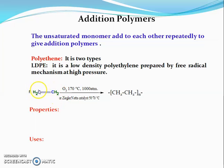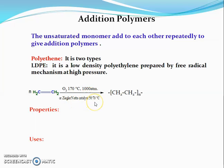For example, ethylene molecules react with oxygen at 175°C and 1000 atm pressure. Alternatively, using Ziegler-Natta catalyst, which is a famous catalyst for polymerization, the reaction is carried out at about 50 to 75°C.